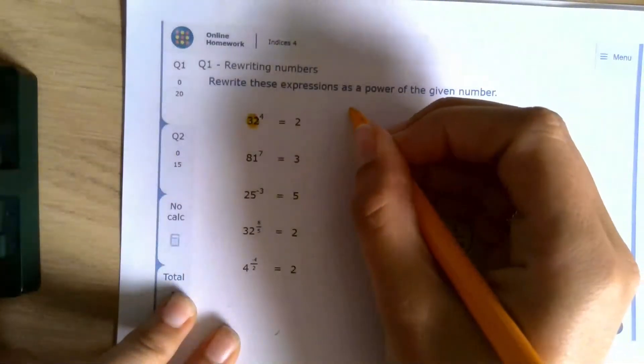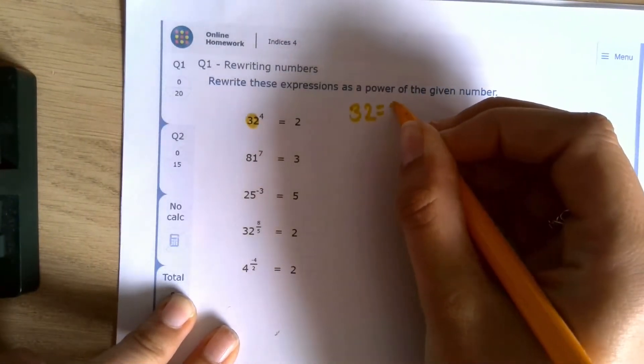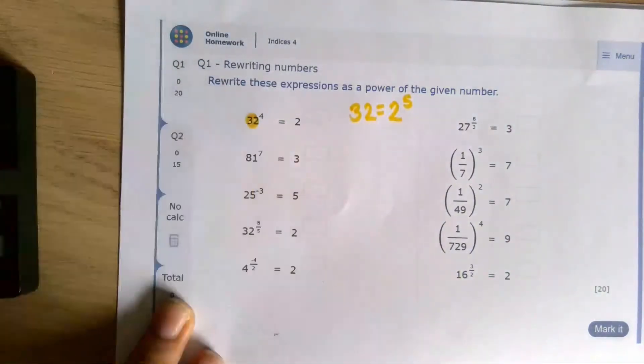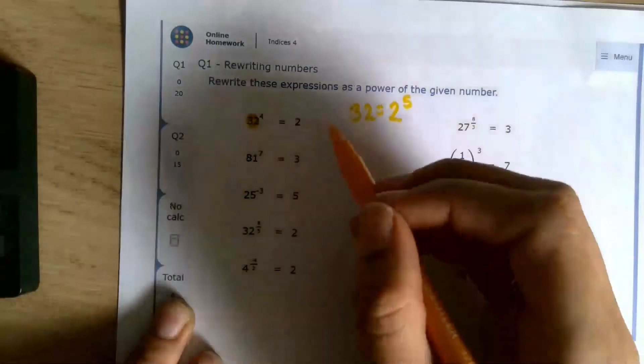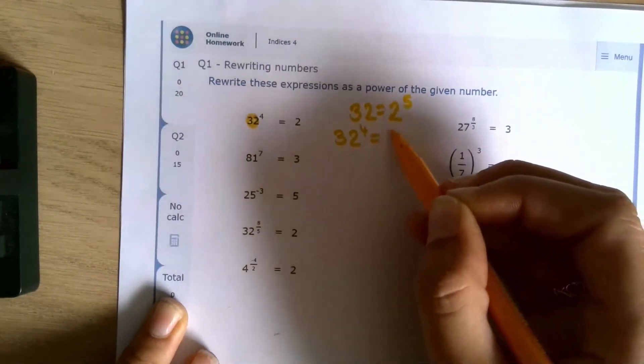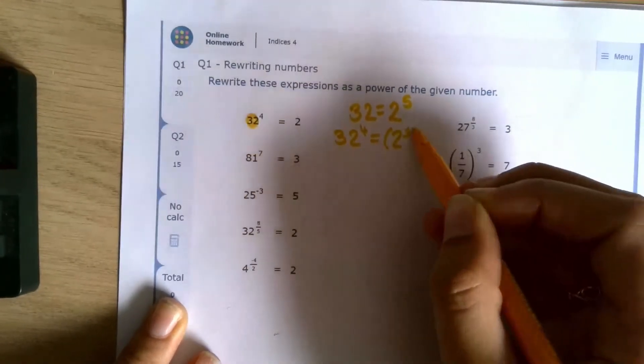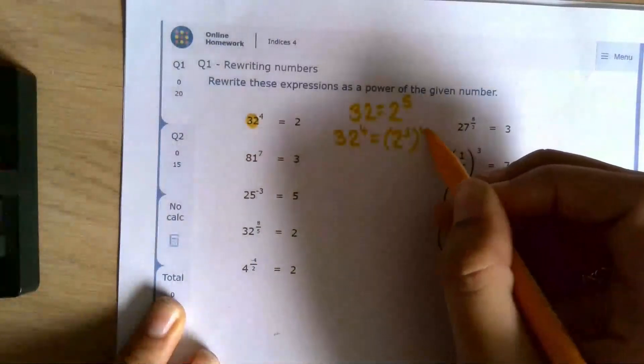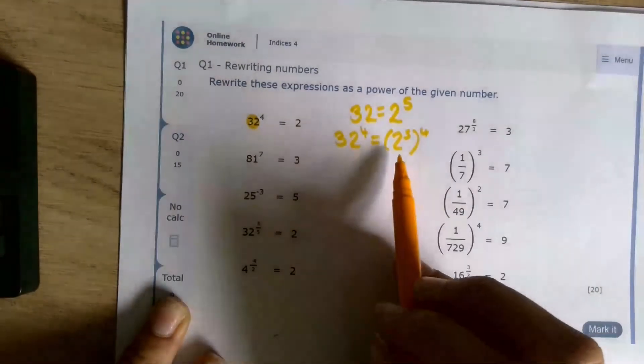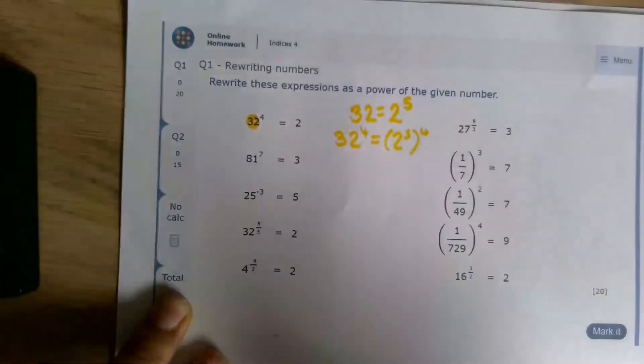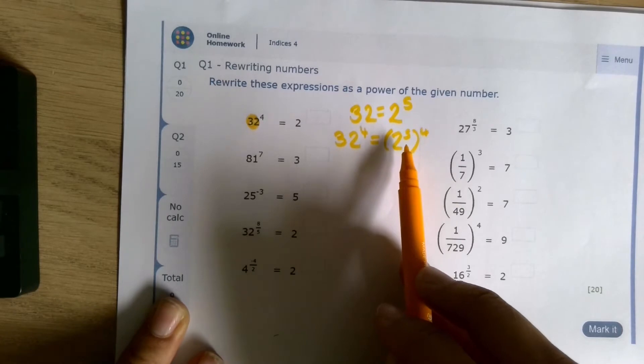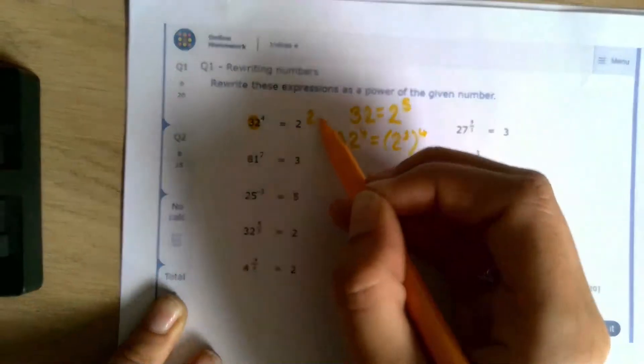So 32 equals 2 to the power of 5. So if I've got 32 to the power of 4, that's going to be 2 to the power of 5, to the power of 4. And what do we do when we have powers inside and outside a bracket? We multiply them. So this is going to be 2 to the power of 5 times 4, which is 2 to the power of 20.